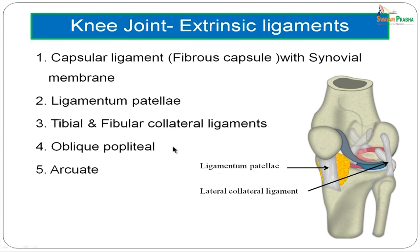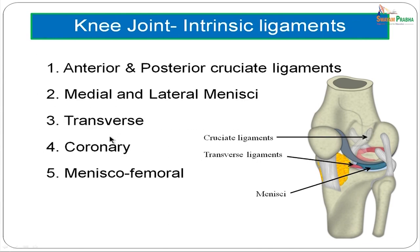The extrinsic ligaments include the capsule or capsular ligament along with its synovial membrane, the ligamentum patellae, the tibial and fibular collateral ligaments, the oblique popliteal ligament, and the arcuate ligament. The intrinsic ligaments, located within the joint cavity, include the anterior and posterior cruciate ligaments, the medial and lateral menisci, the transverse ligament, the coronary ligament, and the meniscofemoral ligaments.